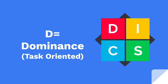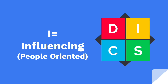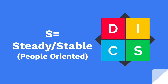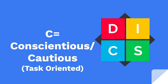D primarily equals dominance. People that are high D tend to be more task-oriented. I equals influencing, and influencers tend to be more people-oriented than task-oriented — that's why you see this quadrant here, with the left side being task-oriented and the right side more people-oriented. S stands for steady or stable; these people value steadiness and stability and tend to be more people-oriented. And the C equals conscientious or cautious, and these folks tend to be more task-focused and task-oriented.